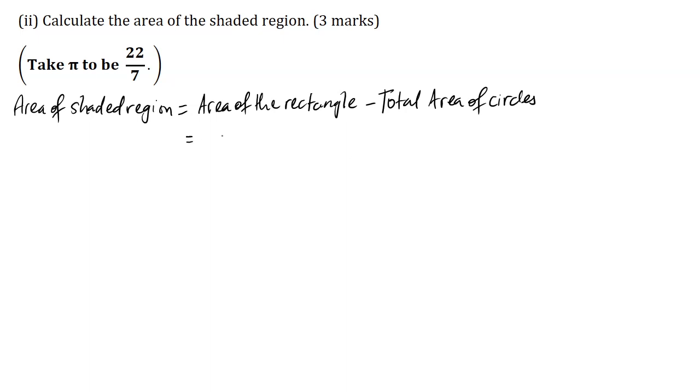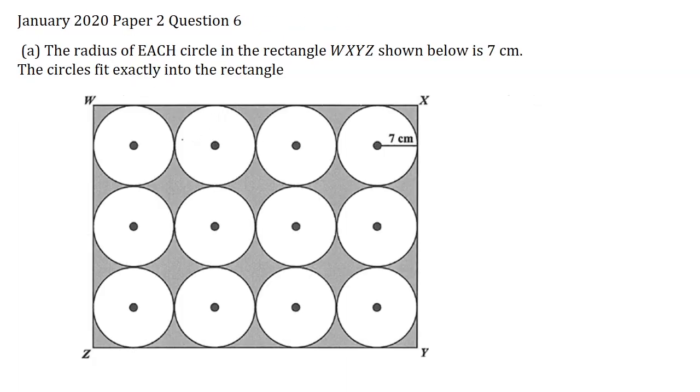The area of the rectangle is given by length multiplied by breadth minus the total area of the circles, which will be n times πr², where n is the number of circles. In our diagram, you have 4 multiplied by 3 which is 12 circles, so n is 12.